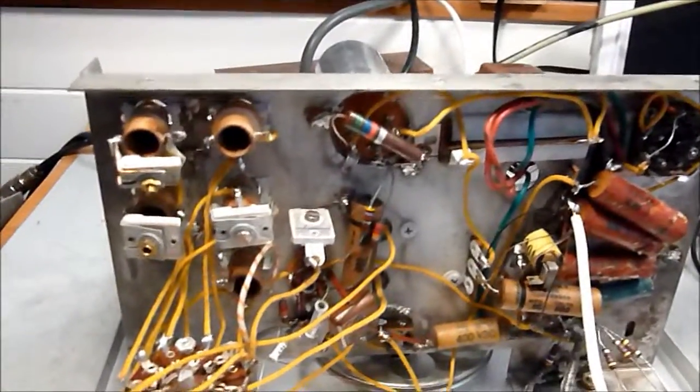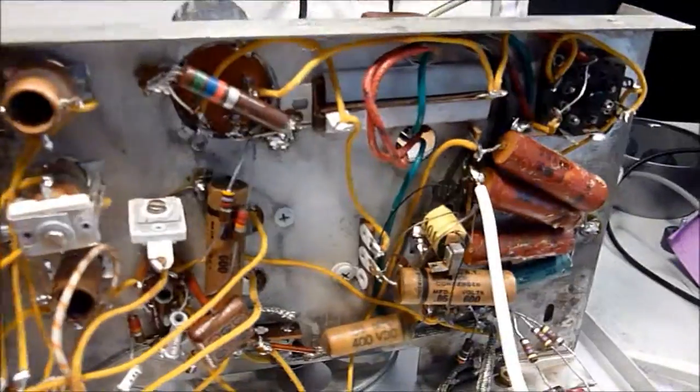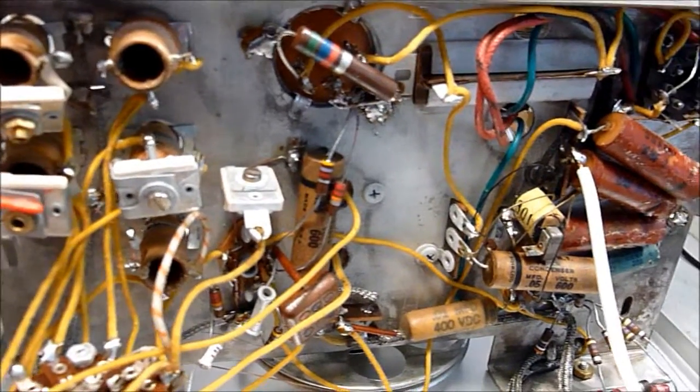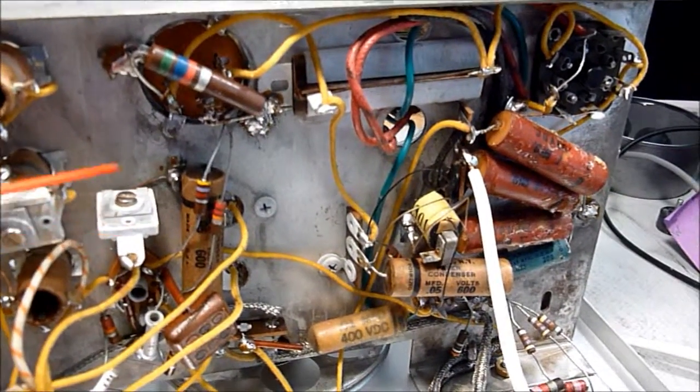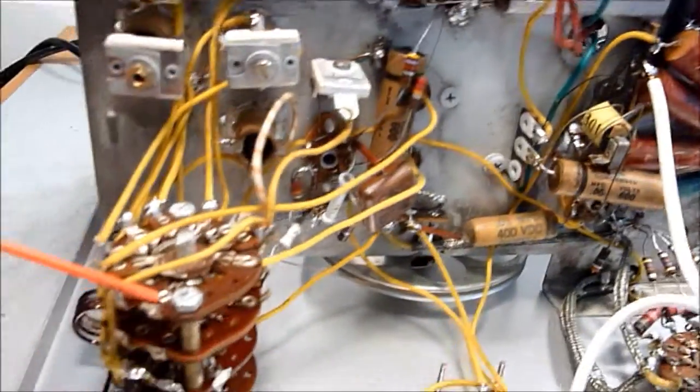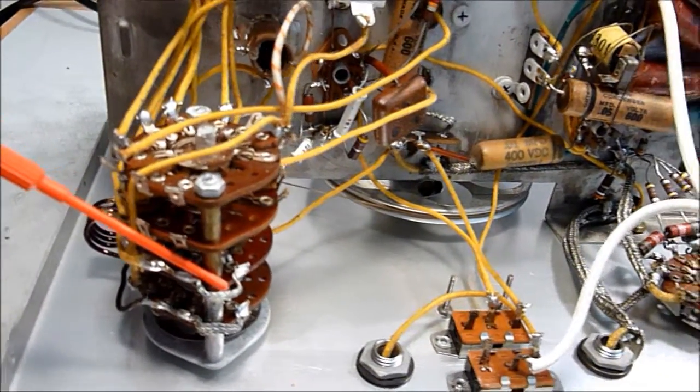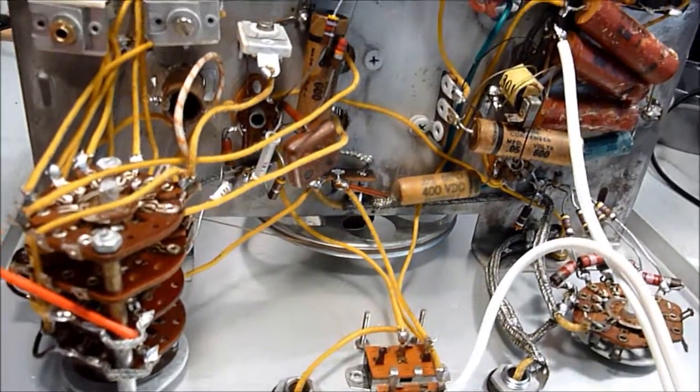Inside we've got some variable caps, looks like they need to have a couple of screws. This one's got the screw and so does this one. Here we've got a selector switch, that's the band switch.